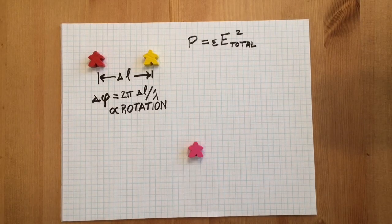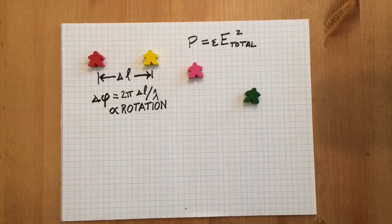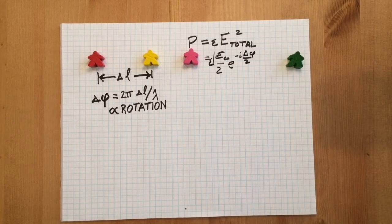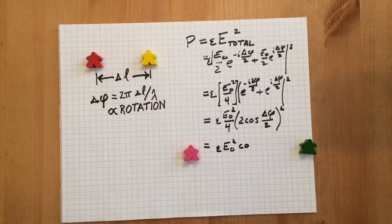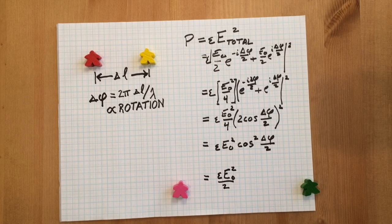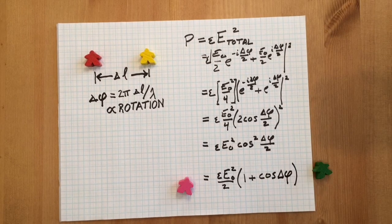The received power can be found by taking the total electric field and squaring it. With some basic trigonometry, we find that the power is related to the phase shift through a raised cosine.